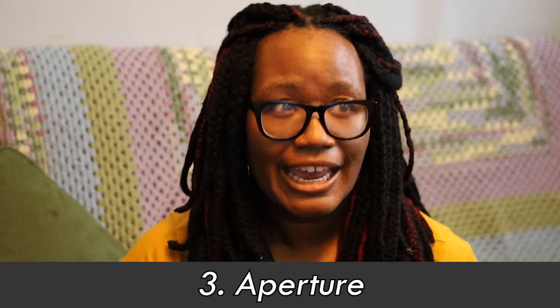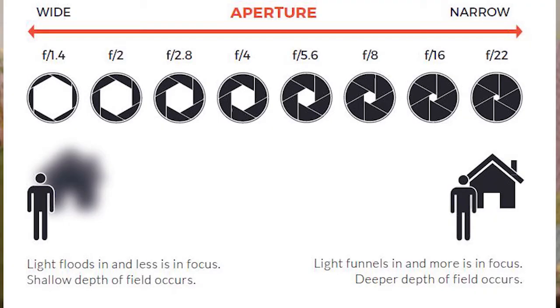Aperture is a small set of blades in the lens that control how much light will enter the camera. Those blades can be widened or closed to a small hole. If the aperture is wide, more light is allowed in. If your aperture is more closed, less light comes in. Aperture is measured in f-stops. A high f-stop like f22 means there's not a lot of light coming in. A low f-stop like 3.5 means it's pretty wide open.